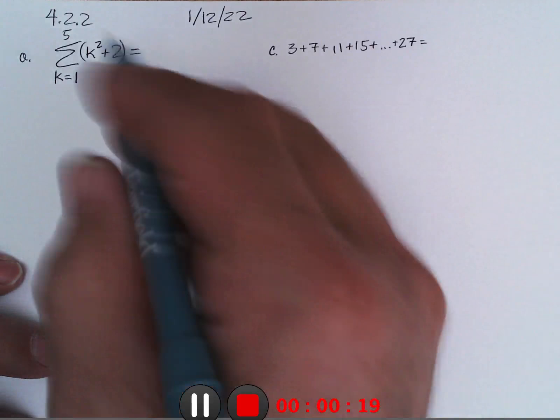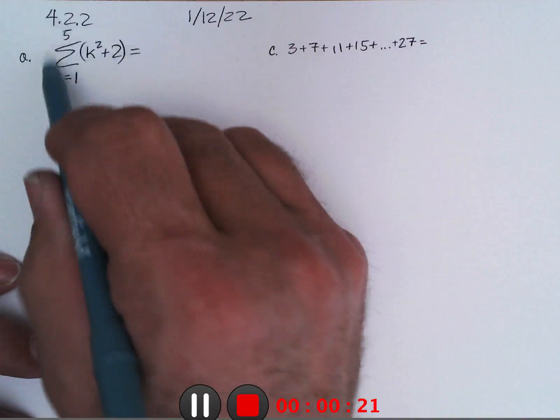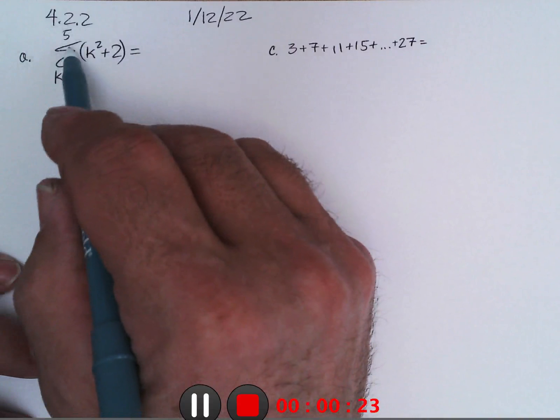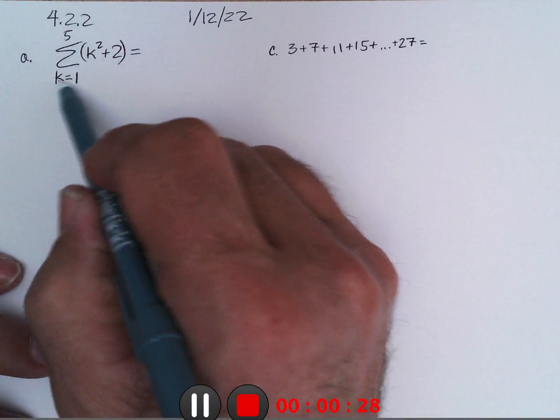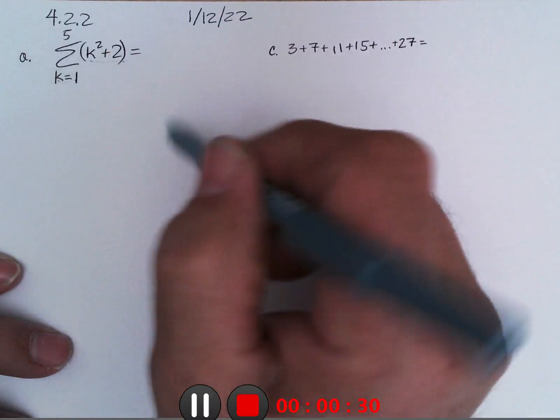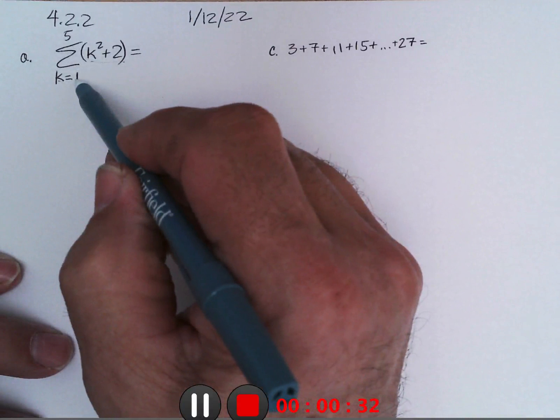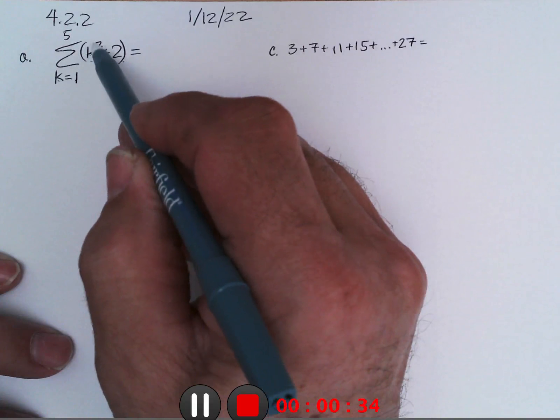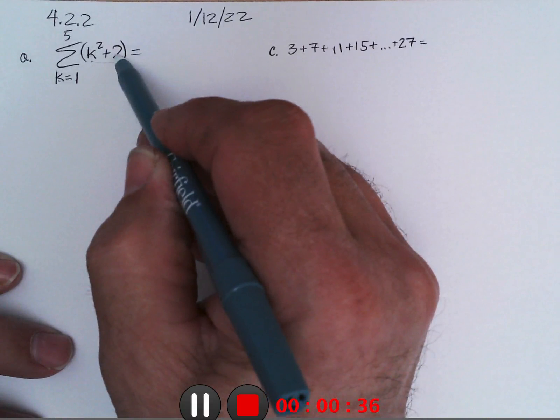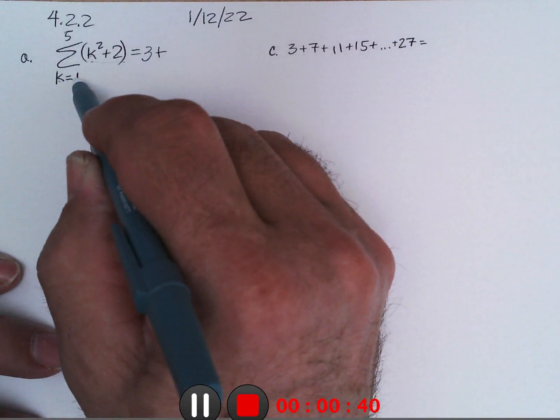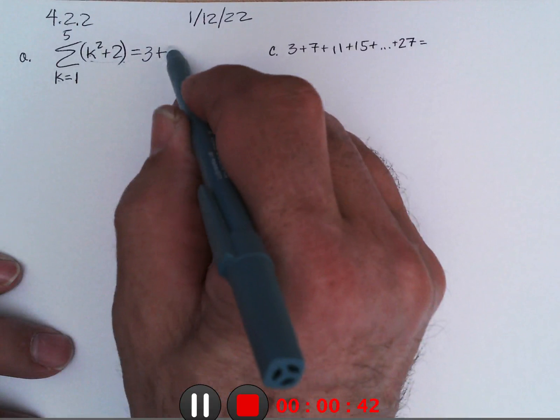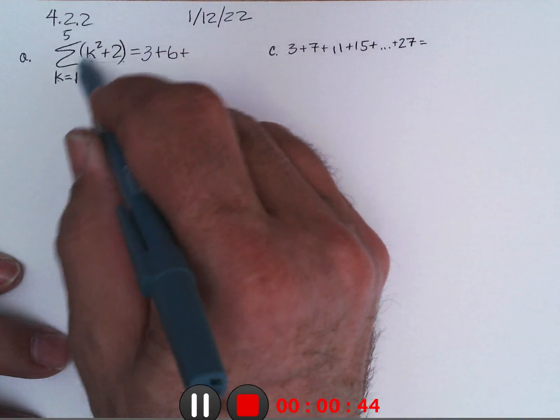So I've asked the class to do this exercise A, and said if K goes from 1 to 5, figure out what this sum is. So we put 1 in for K, 1 squared is 1 plus 2 is 3. Then you put 2 in, 4 plus 2 is 6. Then you put 3 in, 9 plus 2 is 11.